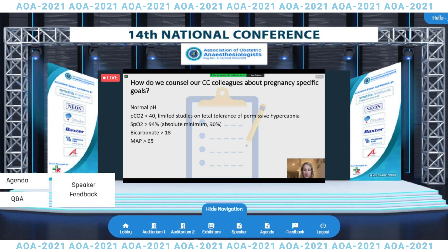Our critical care colleagues will look to the obstetric team to provide recommendations for pregnancy-specific hemodynamic, oxygenation, and ventilatory goals. I leave you with the following goals to share with our critical care colleagues: normalizing the pH, maintaining a pCO2 less than 40, an SpO2 greater than 94%, a bicarbonate greater than 18, and a mean arterial pressure greater than 65. These are simple guidelines but are tangible and promote optimal fetal perfusion.